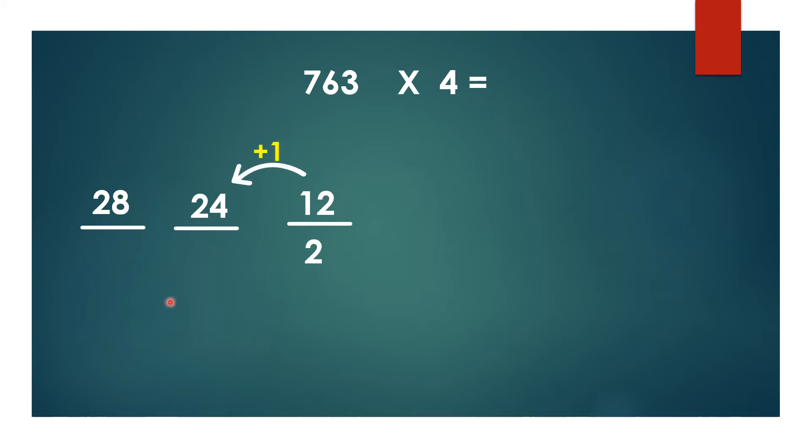1 as carryover, means 24 plus 1 is 25. In this 25 we write only the ones place here, that is 5. This 2 take as carryover, 28 plus 2 that is 30. So the product of 763 into 4 is 3052.